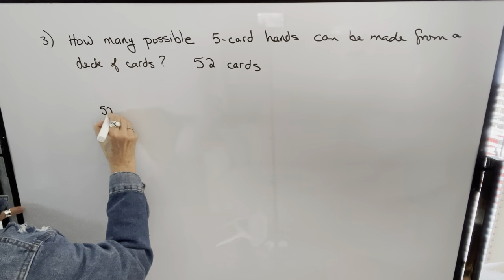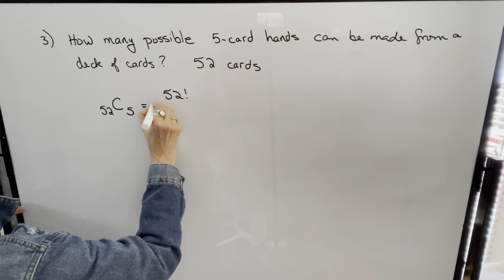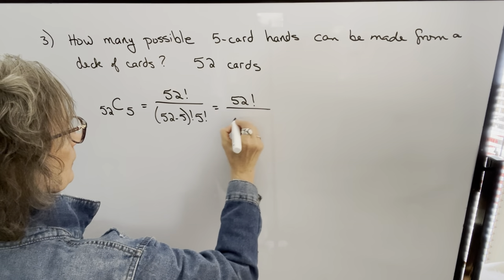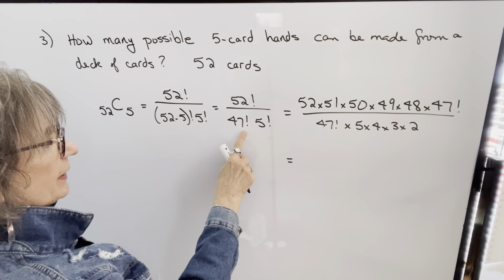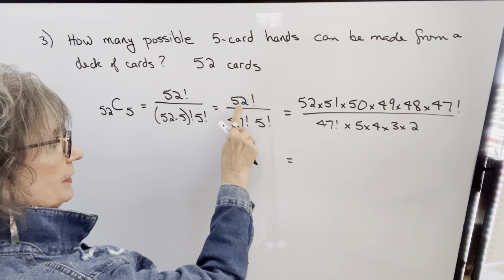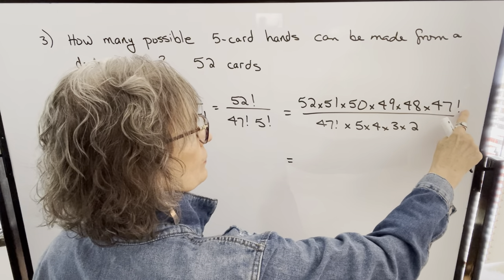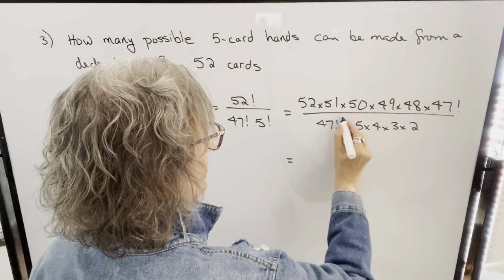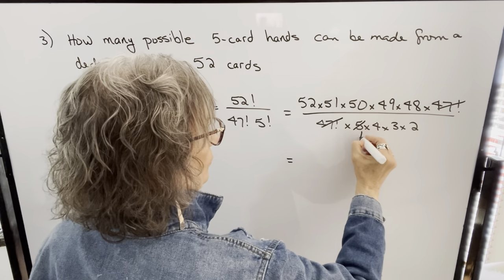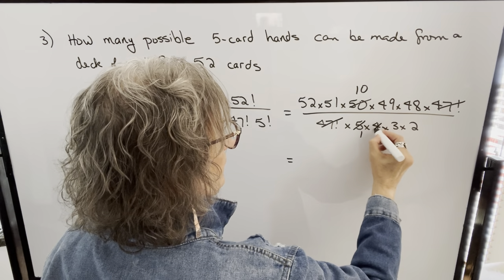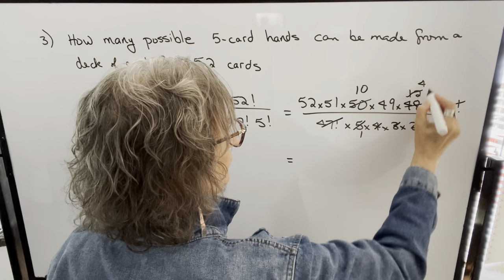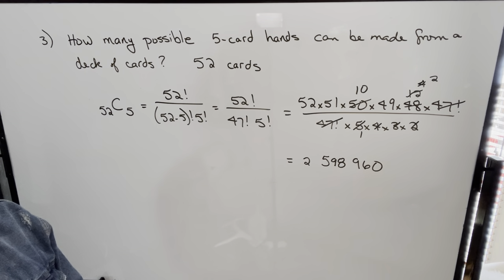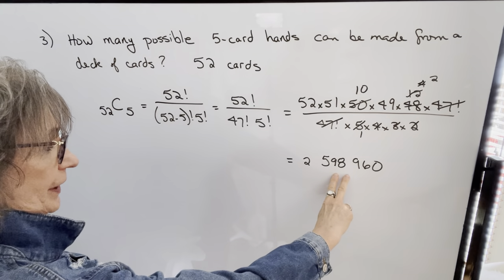To solve, we have 52 cards selecting 5, so we plug into our combination formula: 52C5 = 52 factorial over 47 factorial times 5 factorial. The largest factorial in the denominator is 47 factorial. I break 52 factorial down until I get 47 factorial, leave that in the denominator, and express 5 factorial as 5 times 4 times 3 times 2. The 47 factorial cancels, then simplify the remaining terms. When I multiply it all out, I get 2,598,960 — that's how many possible five card hands can be dealt from a deck of cards.